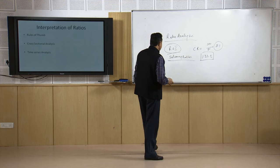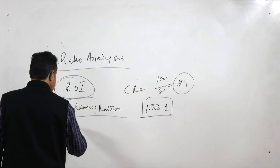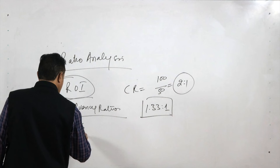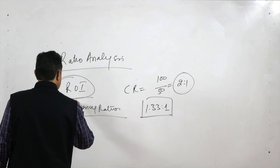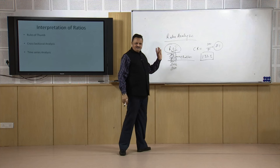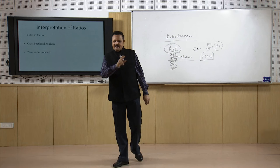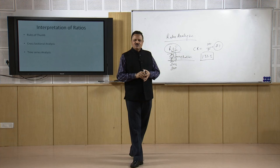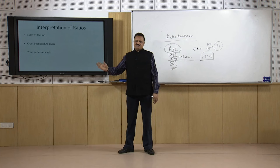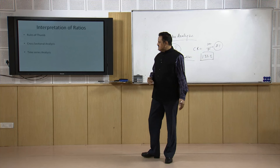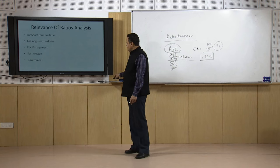Another way is time series analysis — for this one company, you calculate ratios for say 2012, 2013, 2014, 2015, 2016, 2017 — for the past 5, 6, or 10 years. You can see whether the ratio is stable, going up, or going down. You can find out how the company is performing and make an intra-firm comparison on the basis of time series data, projecting what is expected to happen in the next 5 or 10 years.